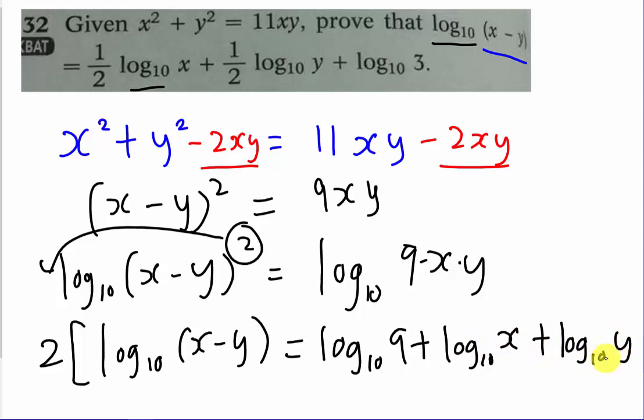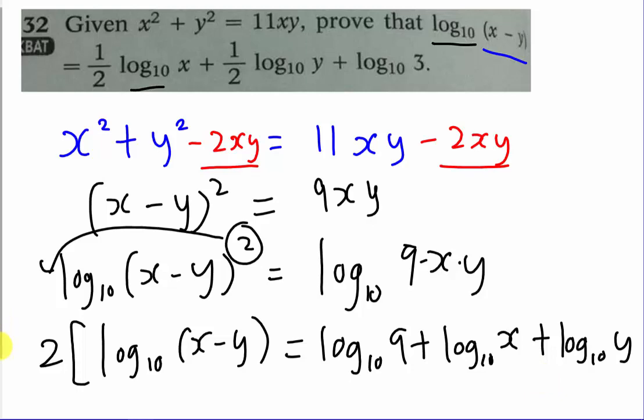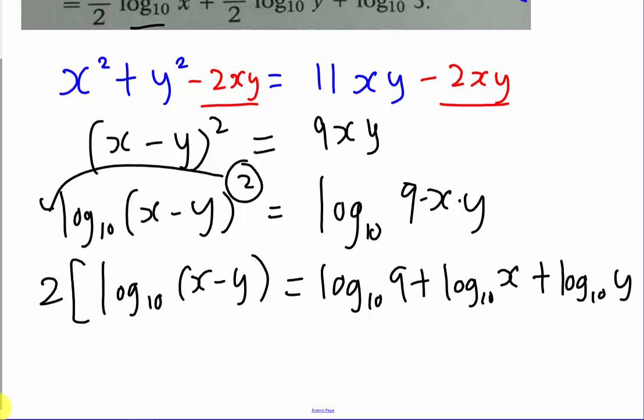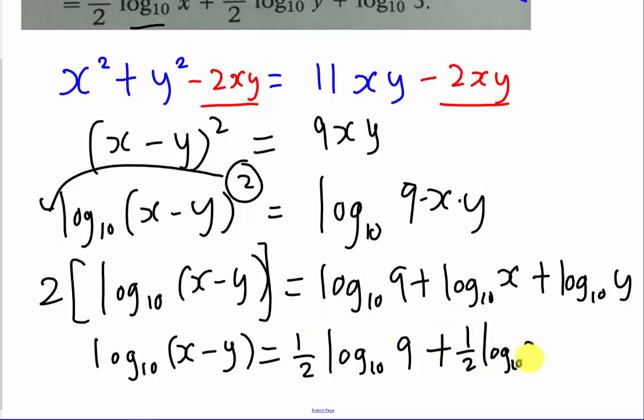When I expand it, it will give me plus, so plus log base 10 of x and plus log base 10 of y. I see I almost got it. What I will do next is I will move my 2 to the other side, so it becomes divided by 2 for every single one. So the next step is I will write one-half log base 10 of 9, plus one-half log base 10 of x, and plus one-half log base 10 of y.